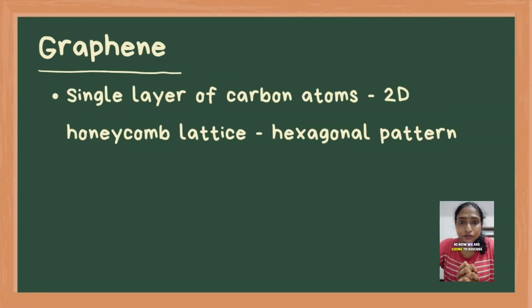Hi, now we are going to discuss graphene. We will be seeing its structure and applications. Graphene is a single layer of carbon atoms arranged in a two-dimensional honeycomb lattice. Each carbon atom in graphene is bonded to three others in a hexagonal pattern, giving it exceptional properties.